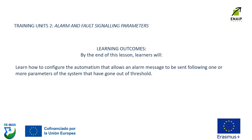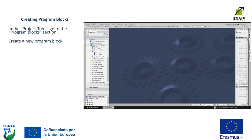Training unit two, learning outcomes. By the end of this lesson, you will learn how to configure the automatism that allows an alarm message to be sent following one or more parameters of the system that have gone out of thresholds.